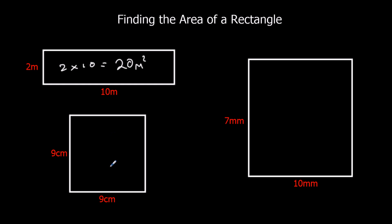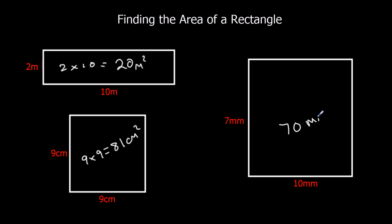Here we've got a square — it's nine times nine. Nine times nine is eighty-one centimetres squared this time. And this one's in millimetres, so we're going to measure it in millimetres squared. Seven times ten is seventy, and that's millimetres squared this time.